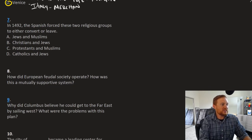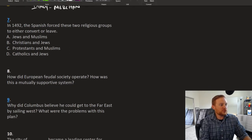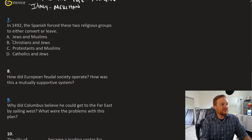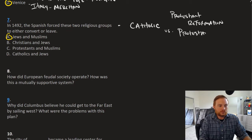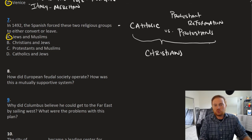Question number seven, in 1492, the Spanish forced these two religious groups to either convert or leave. The answer is A, Jews and Muslims. For Spain, once Ferdinand and Isabella united the crown, Spain was a heavily Catholic nation. The Protestant Reformation, which may not be covered in this particular chapter, split Christianity between Catholics and Protestants. So these two groups, Catholics and Protestants, they still fall under this umbrella of Christians. So they're still Christians.